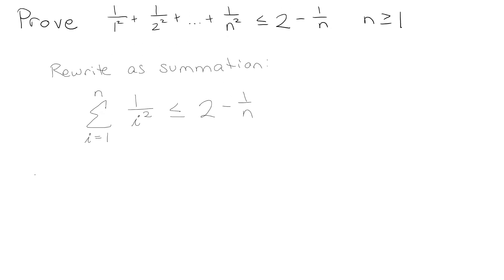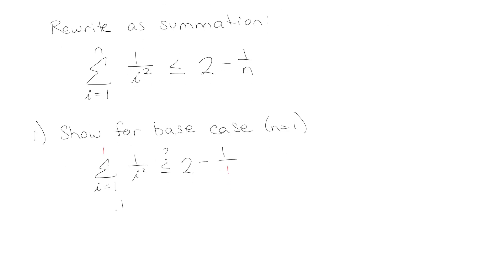Now it gives us our base case, which is our first step. You want to demonstrate or show for base case, and in our case base case is n equals 1 because that's the first place that starts. So that means everywhere I see an n I'm going to write a 1. So 1 over i squared, is that less than or equal to 2 minus 1 over n? I've got everywhere I see an i I'm going to put a 1. Is that less than or equal to 2 minus 1? And indeed 1 is less than or equal to 1. So good, done proof of the base case.